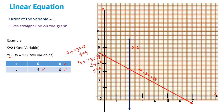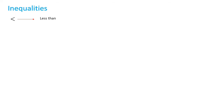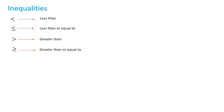To recap: a linear equation must have the order of the variable equal to 1, and when plotted on a graph sheet, it should give a straight line. Now we shall discuss inequalities. There are mainly four inequality symbols: less than, less than or equal to, greater than, and greater than or equal to.